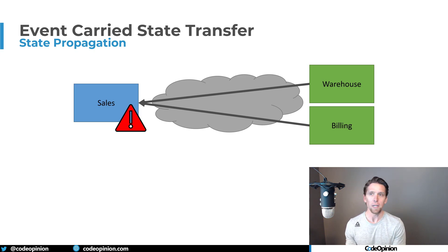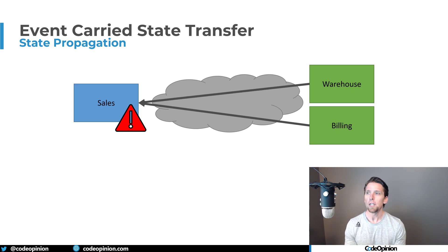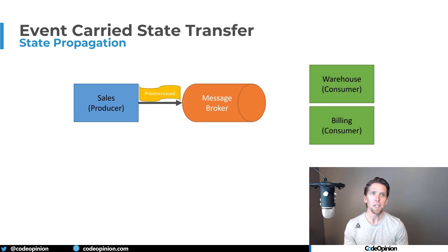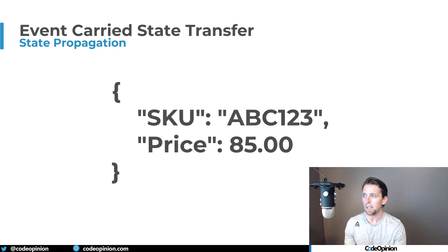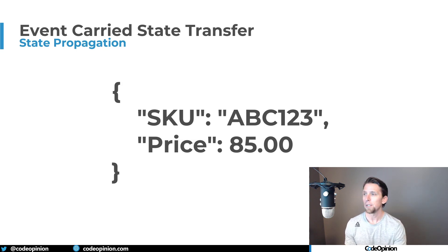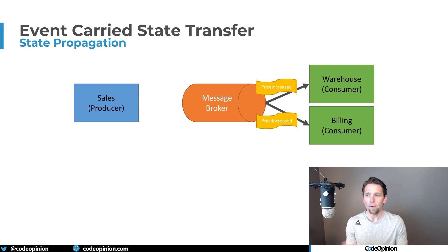So instead of that potential issue, the idea is that you have a local copy within billing and within the warehouse of data you need from sales. Instead of making RPC calls every time you need it, you have a local copy. In order to maintain that local copy, you use event-carried state transfer. When something happens to a product within sales — say there's a price increase — it publishes that event. That event might contain just the SKU, say ABC123, and what the price is now, say $85. That price increase event is published and then consumed by both warehouse and billing, and each one updates its own local cache copy of whatever data it needs.